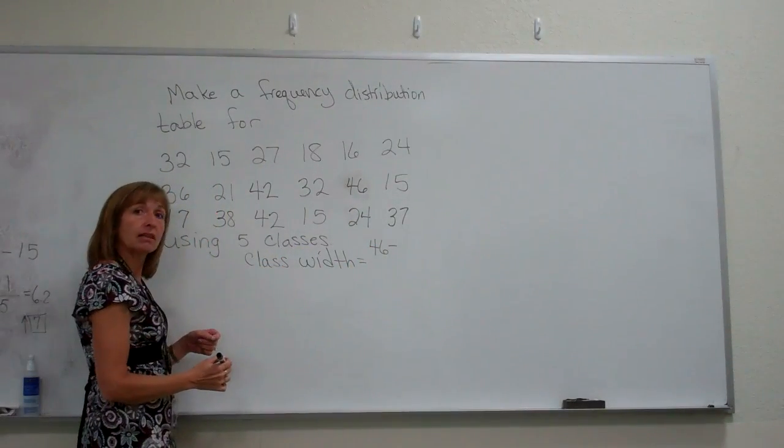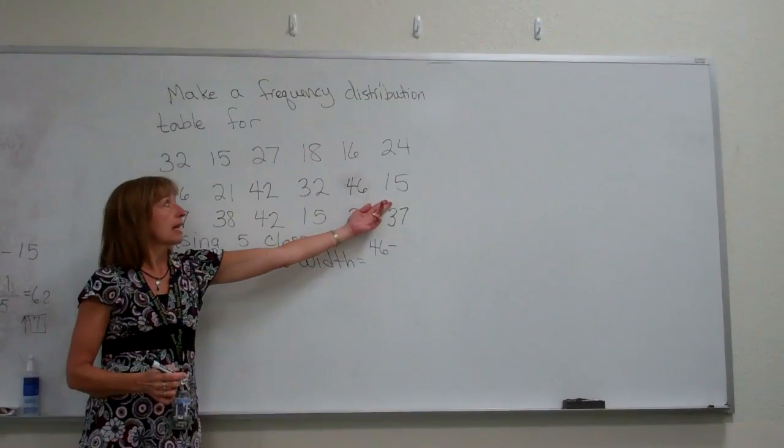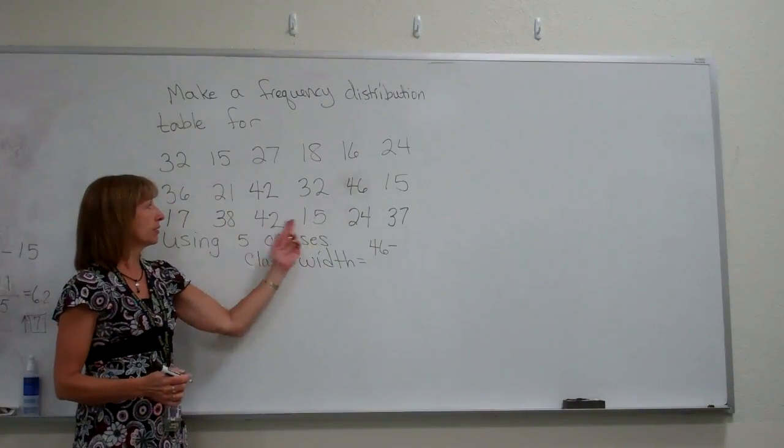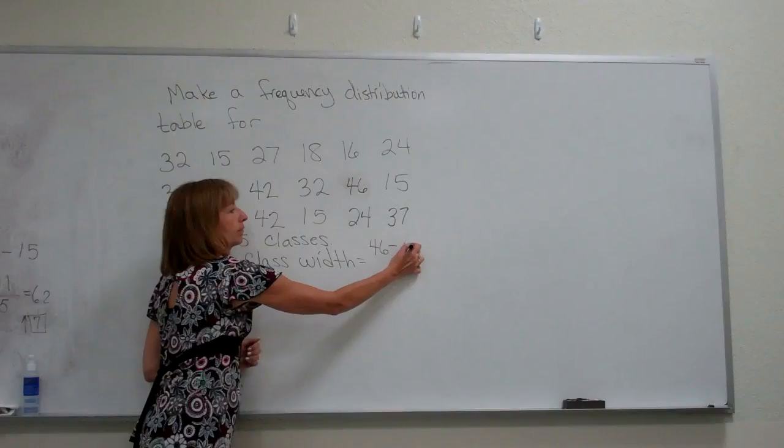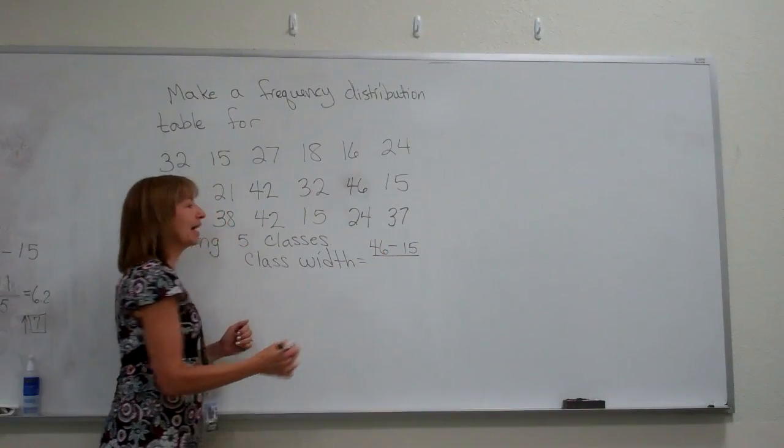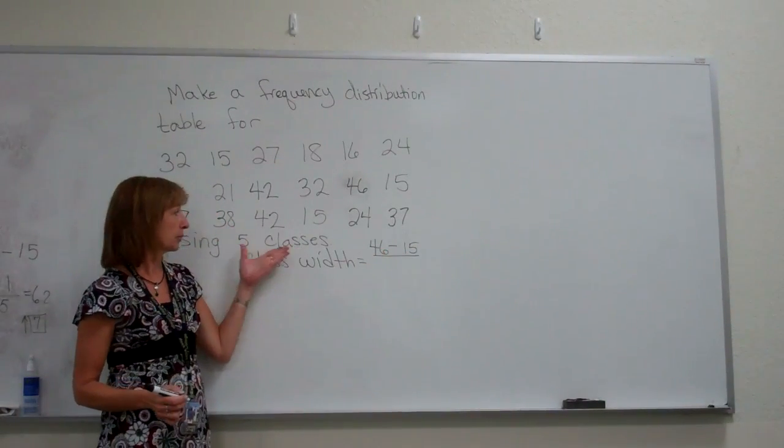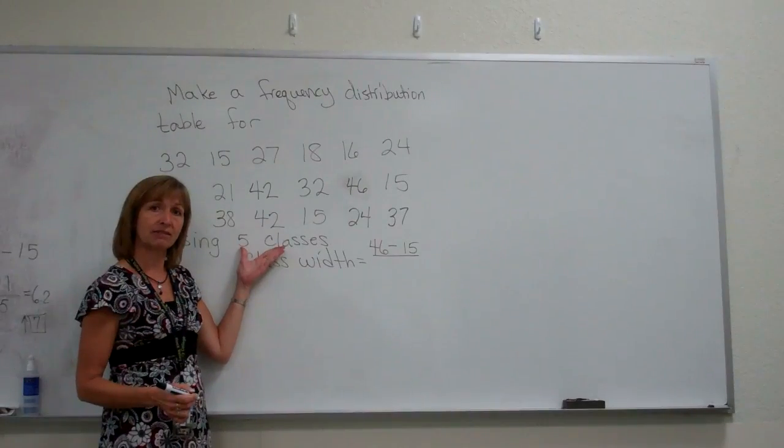Subtract from it the smallest data value. Here, the smallest data value throughout all of these values is 15. And divide that by the number of classes that the question asked you to compute. The number of classes here is 5.